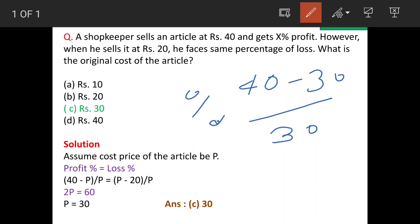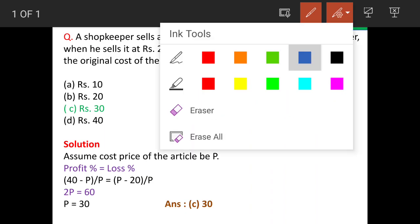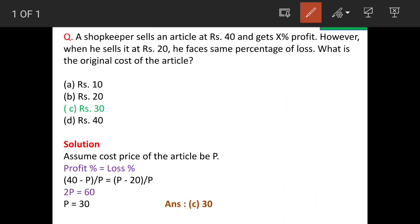Okay, so now since we don't know the price as of now, we'll assume price is P. So the profit will be 40 minus P upon P.